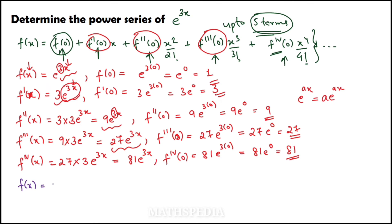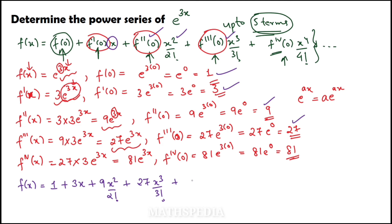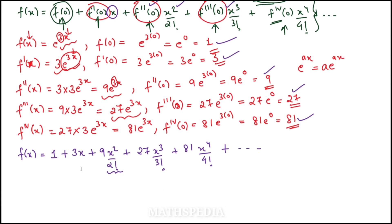So f(x) becomes: f(0) which is 1, plus f'(0) which is 3 multiplied by x, plus f''(0) which is 9 multiplied by x²/2!, plus the third derivative 27 multiplied by x³/3!, plus the fourth term 81 multiplied by x⁴/4!, and so on. Now I can just put in the factorial values.